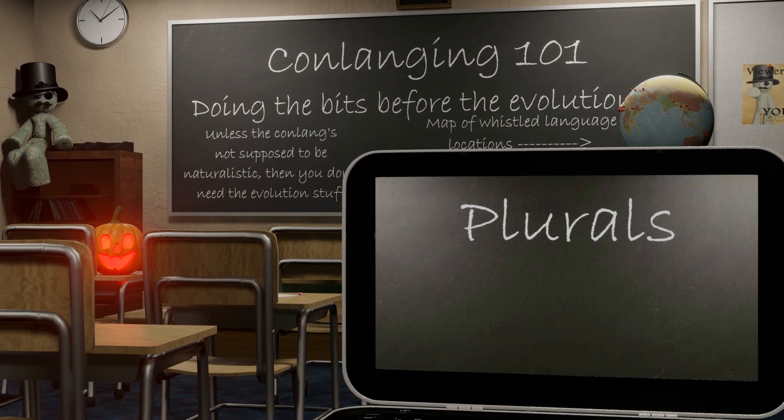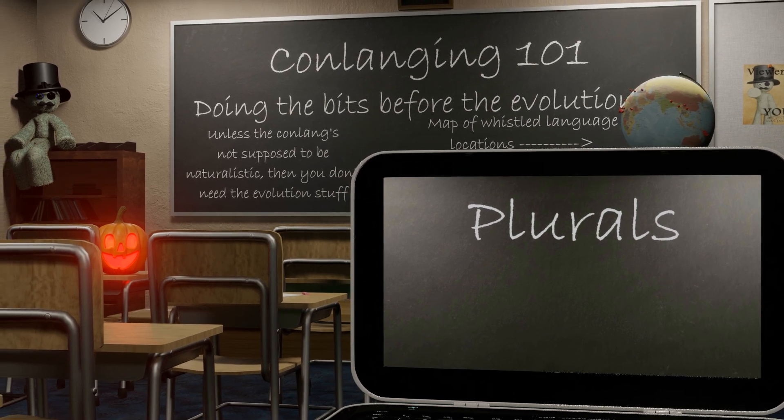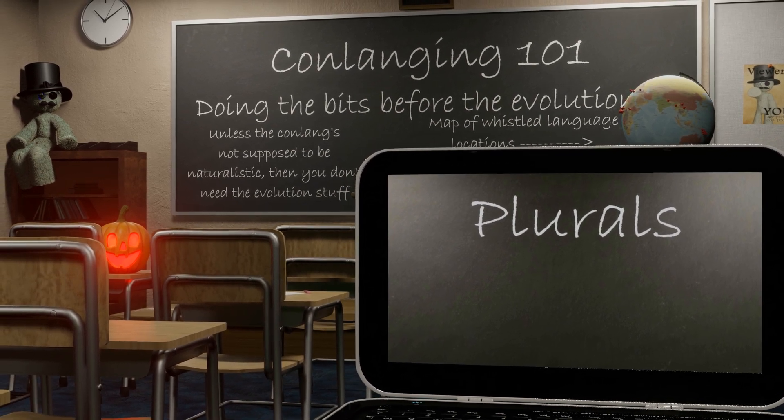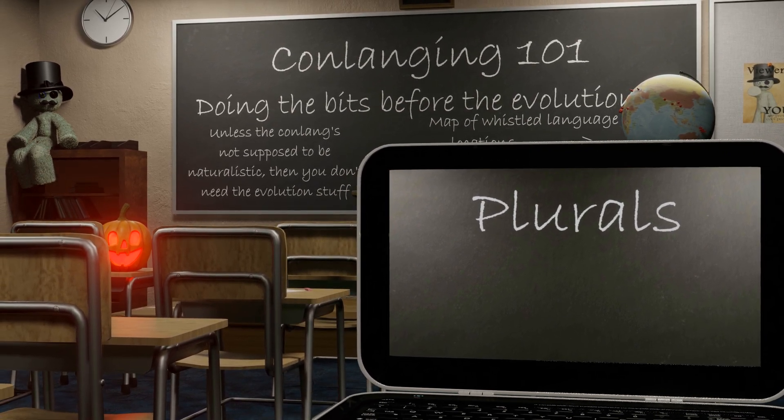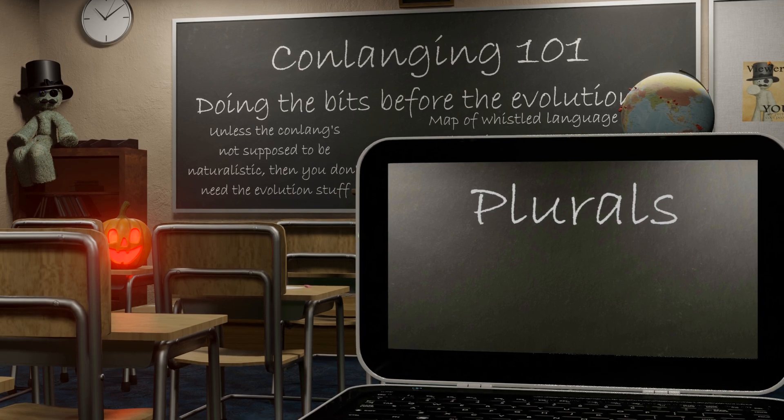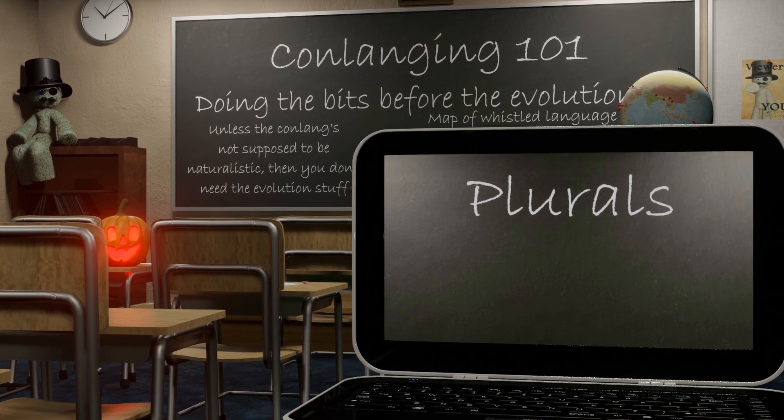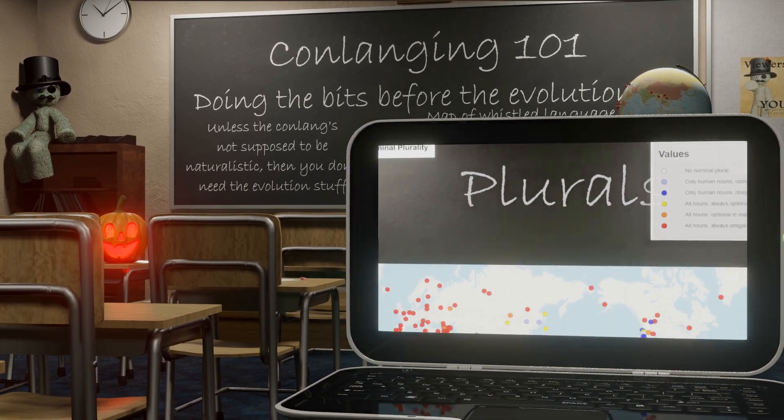So you've got a language, and you want it to be more natural. It's got cool features, but without irregularities, it just falls flat — like this wall! You can't just apply irregularities at random. Look at this wall if I apply irregularities at random.